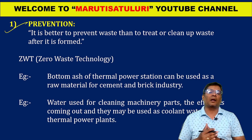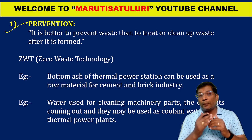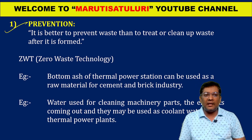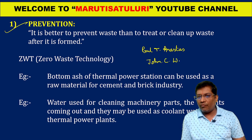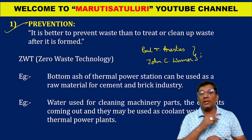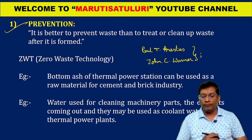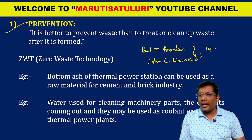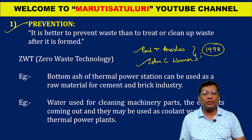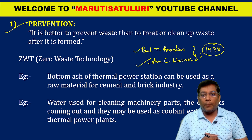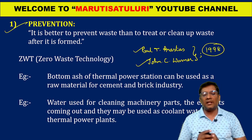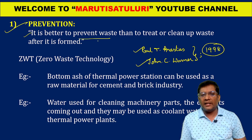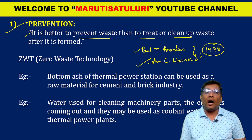Prevention is the first important principle. Paul T. Anastas and John C. Warner introduced these 12 important green chemistry principles in 1998. For prevention, the definition is: it is better to prevent the waste than to treat or clean up after it is formed.